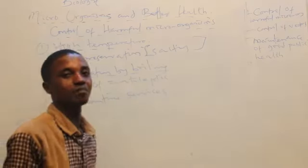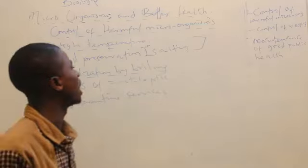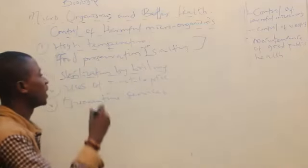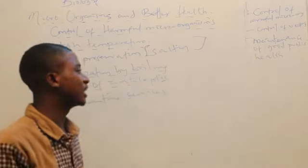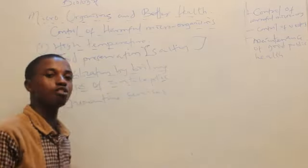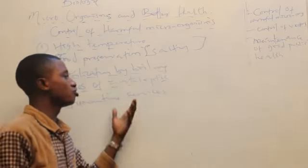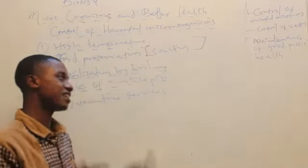Now, sterilization by boiling: any of your equipment, any of your apparatus, when you boil them it destroys microorganisms that are attached to it. Use of antiseptics: antiseptics are chemicals that help to inhibit the growth of organisms such as bacteria. There are also soaps, domestic soaps that are antiseptic in nature.